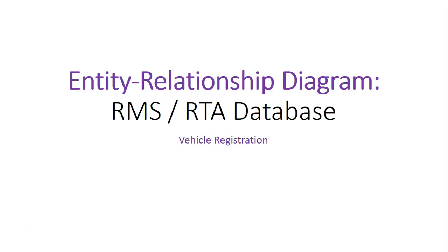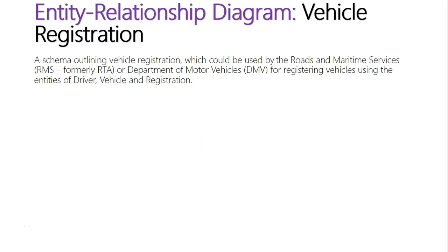Entity relationship diagram: vehicle registration. In some previous videos we've taken a look at data dictionaries used to illustrate different categories of data that would be stored on vehicles, on license holders, and on registering in New South Wales. These were data dictionaries used to illustrate flat file databases, and we showed the idea of foreign keys being used to link other databases. The best way of illustrating a relational database is using an entity relationship diagram.